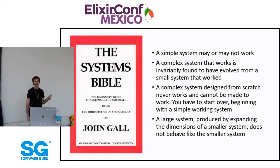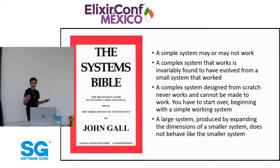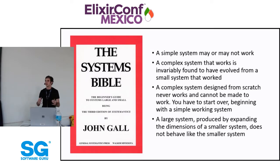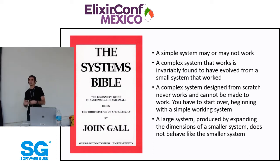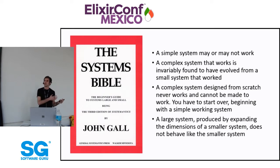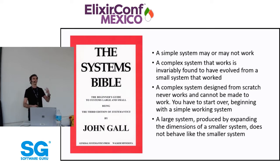A complex system that works is invariably found to have evolved from a small system that worked. What this tells us is that a complex system you start from scratch — deciding to have 50 different services, developing all of it and putting it into production — is not going to work. You have to start with a very simple system and iterate, adding complexity as you go. Or if you already have a complex system, you can't replace it wholesale — you have to replace components one at a time or drop features to build from something simpler.